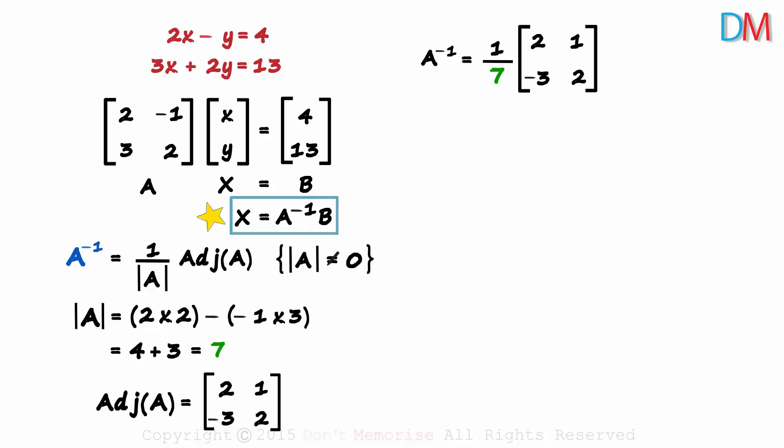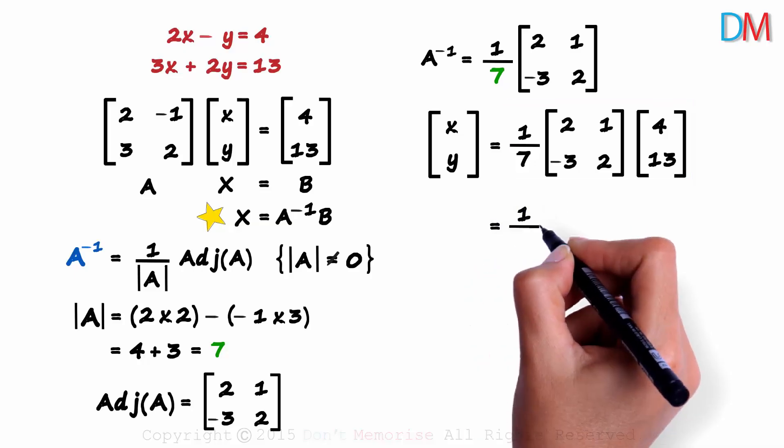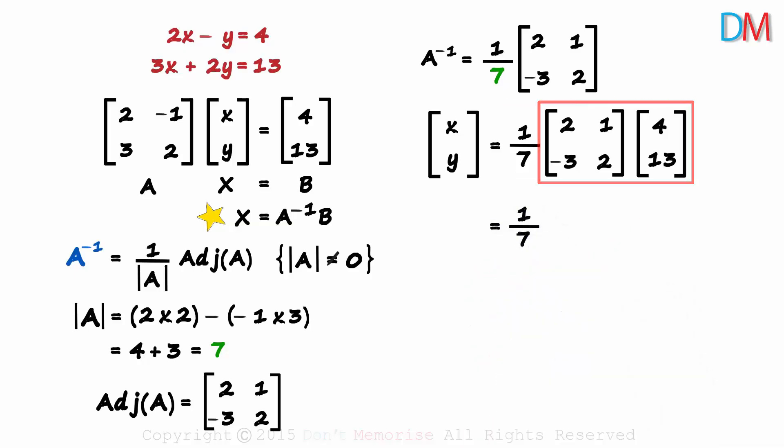X is equal to A inverse times B. Matrix X is XY. A inverse is this and matrix B is 4, 13. This is A inverse and this is matrix B. This will equal 1 over 7 multiplied by this product. How do we find this product of matrices? The order of this matrix is 2 by 2 and that of this matrix is 2 by 1. As the second and the third number are equal, they are compatible for multiplication. And the order of the resulting matrix will be first number by the fourth number. So the order of the resulting matrix will be 2 by 1.